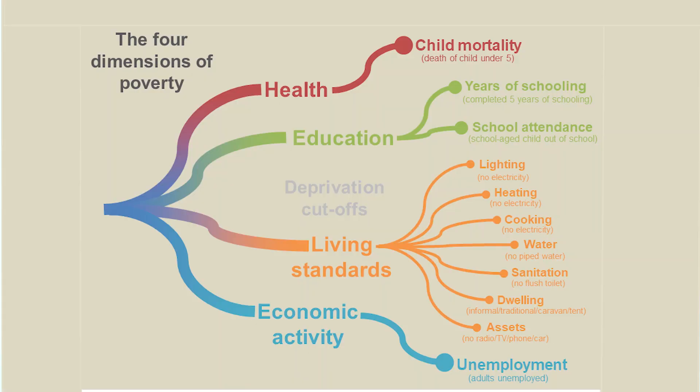The South African MPI has four dimensions and 11 indicators. We added the dimension on economic activity because in South Africa unemployment is a major challenge. A measure of poverty that excluded unemployment would not have been a suitable one.